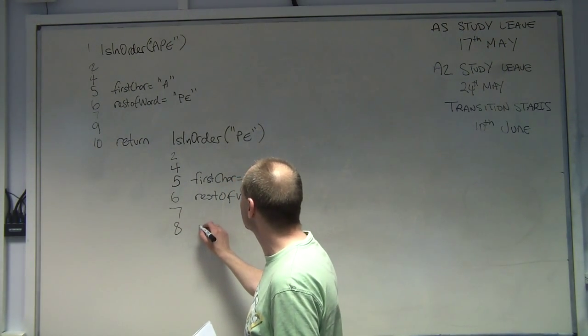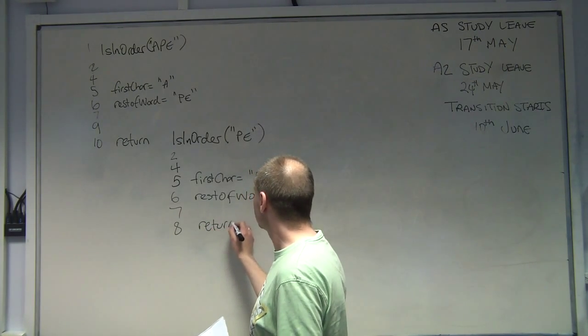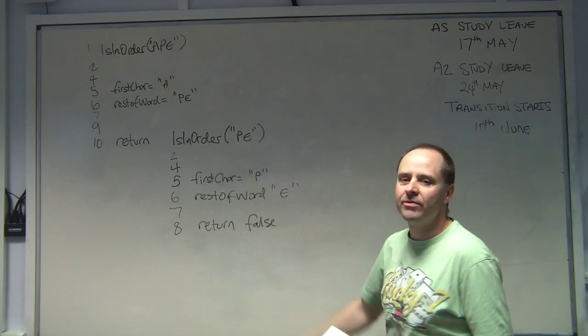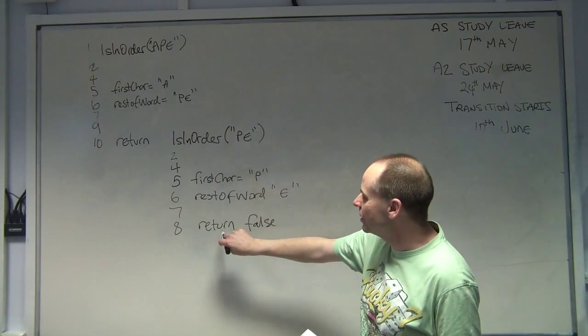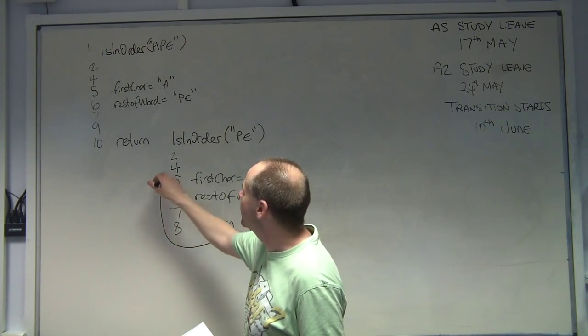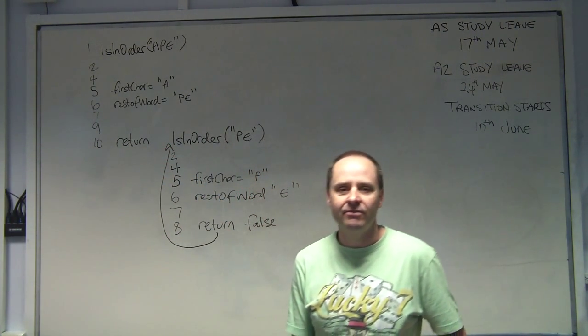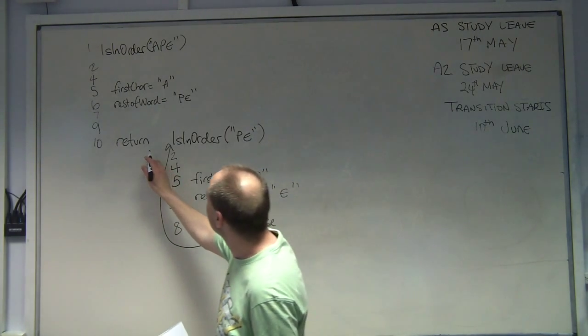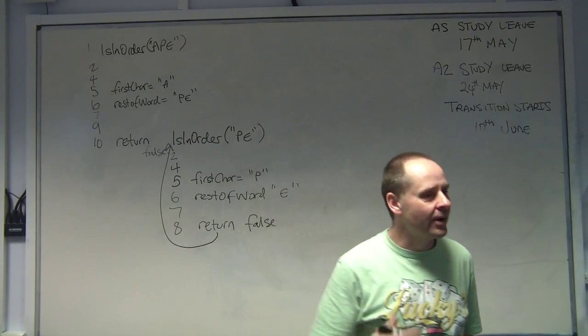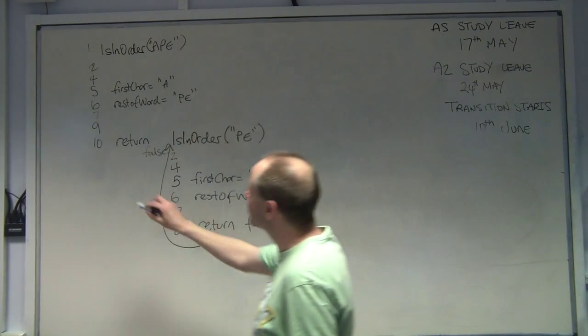So on line seven we're directed to do return false. So we're going to say return false. We've done the job of that function. We're going to return. So what we do when we're doing these dry runs of recursion, we go back to where we called the function and pass that value. So we say there, false.